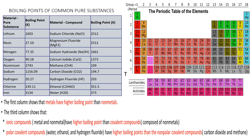Here we have a table showing the boiling points of common pure substances. In the first column we have metals: lithium with a boiling point of 1,603; aluminum with a boiling point of 2,743, located in group 3A of the periodic table; sodium with a boiling point of 1,156, in group 1A; and iron with a boiling point of 3,134 Kelvin. We can now compare these with the non-metals: neon in group 8A; nitrogen with a boiling point of 77.35 in group 5A; oxygen at 90.18 in group 6A; hydrogen at 20.27; and chlorine at 239 in group 7A.